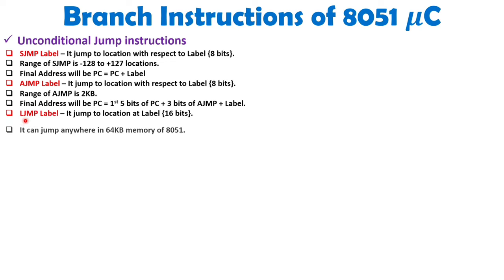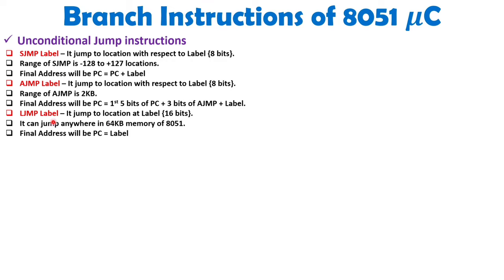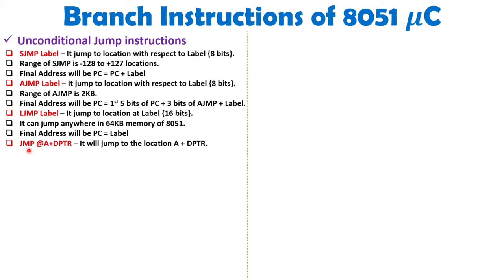Now let us see LJMP. LJMP can jump anywhere in the memory of 8051. Since 8051 can have at most 64 KB memory, by using LJMP we can jump anywhere because the label size is 16 bits, and 2 to the power 16 equals 64 KB. After LJMP, the Program Counter takes the address of the label, which is 16 bits. Additionally, there is JMP, written as JMP @A+DPTR, which jumps to the location pointed to by A plus DPTR.